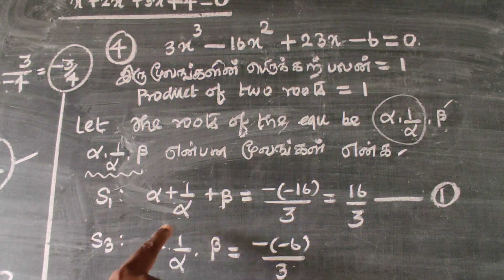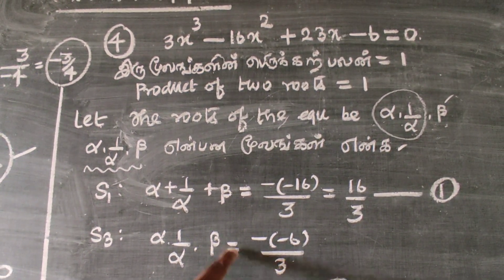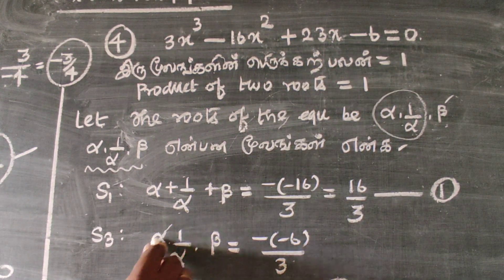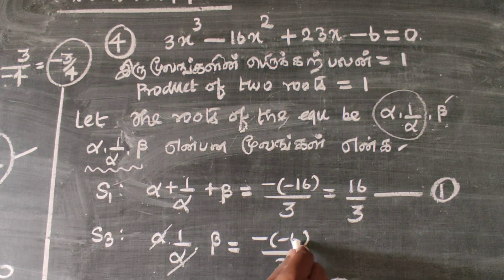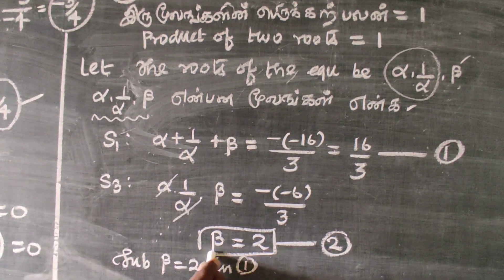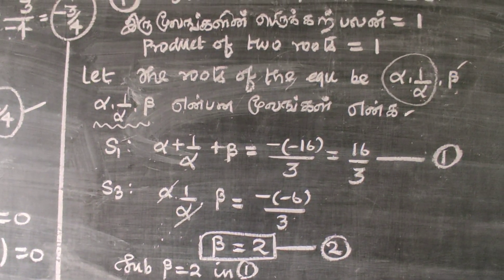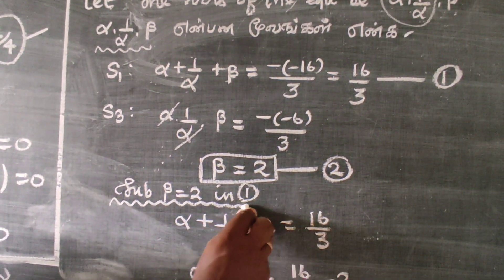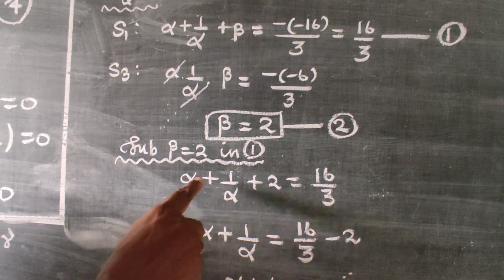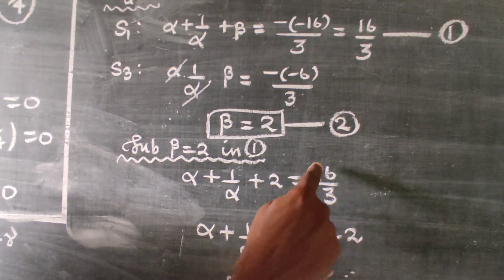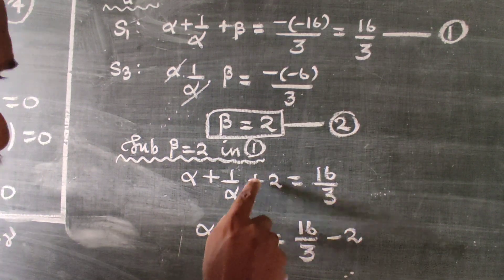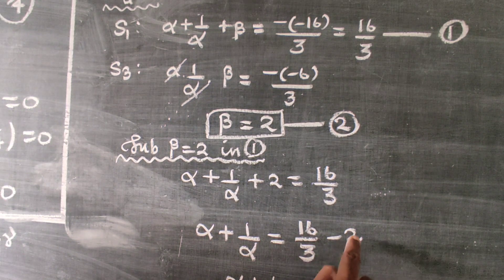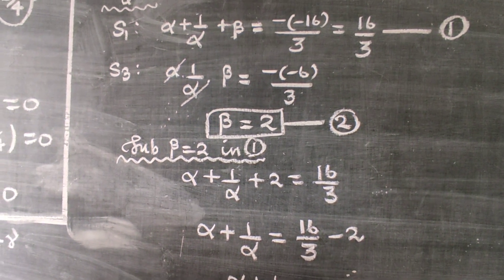S3 (product of roots): α × (1/α) × β equals minus d by a, which is minus of minus 6 by 3. The α's cancel, so β = 6/3 = 2.